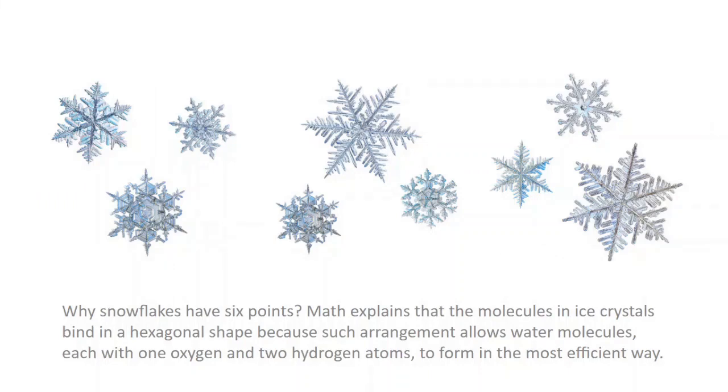Why snowflakes have six points? Math explains that the molecules in ice crystals bind in a hexagonal shape because such arrangement allows water molecules, each with one oxygen and two hydrogen atoms, to form in the most efficient way.